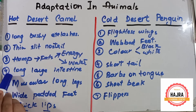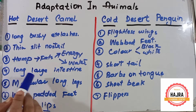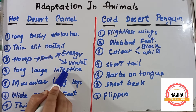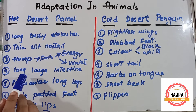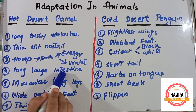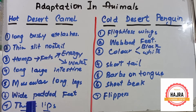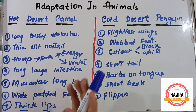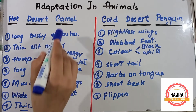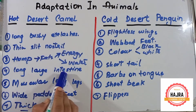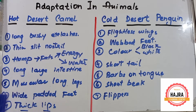Number four point: they have a long large intestine. The function of the long large intestine is to reabsorb water. In humans, the function of the large intestine is to absorb water and nutrients, but in camels the large intestine is very long, which is why it reabsorbs and stores water.